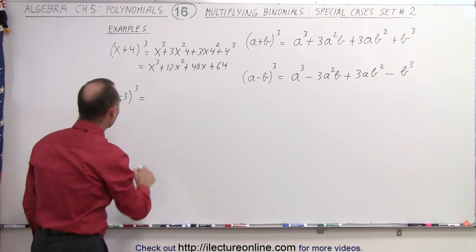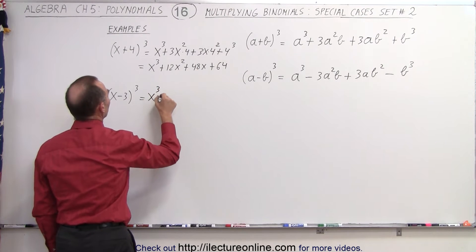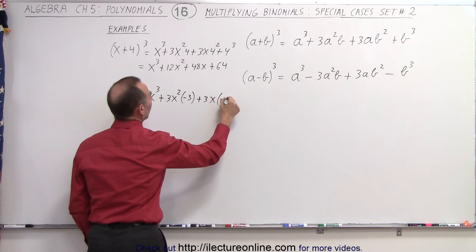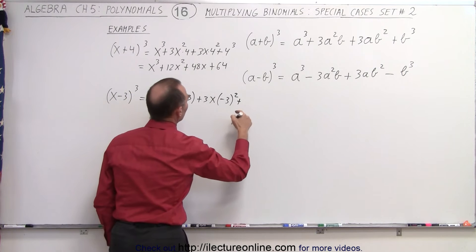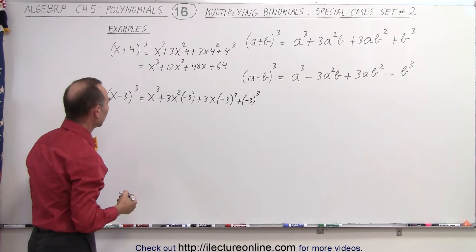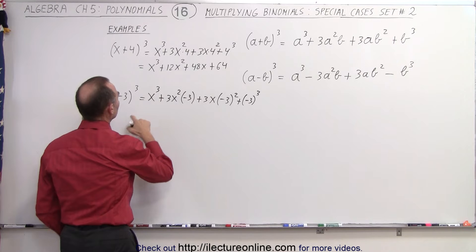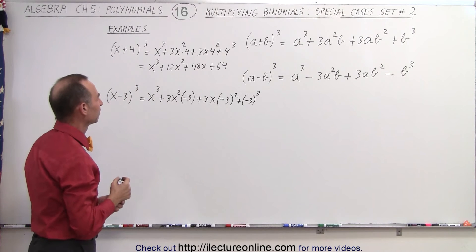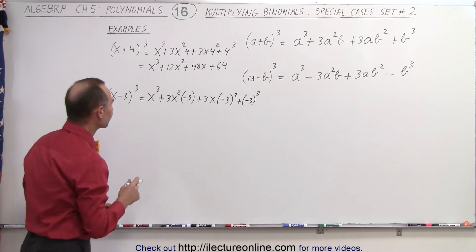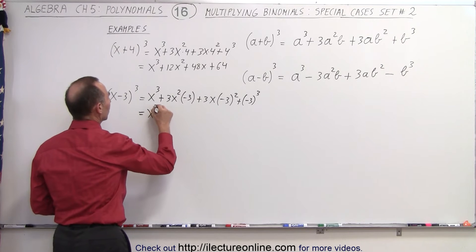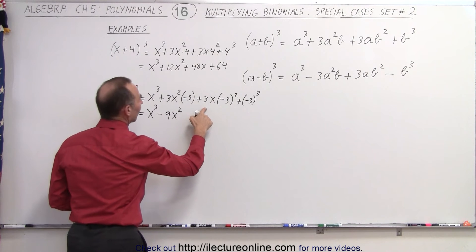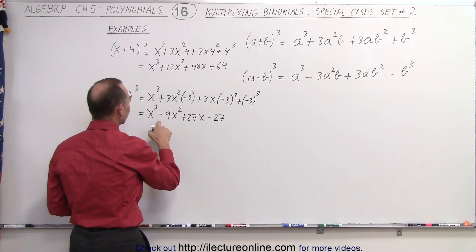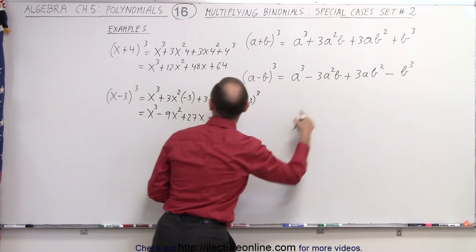Same over here: we have x cubed, plus three times x squared times the second term to the first power, plus three times x to the first power times the second term squared, plus the last term cubed — so plus minus three cubed. When we simplify that, we get x cubed minus 9x squared plus 27x minus 27. Notice the signs then line up: plus, minus, plus, minus — just like what we expect when we have an x minus quantity cubed.